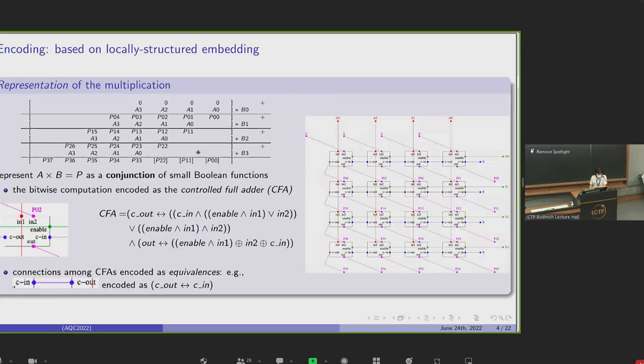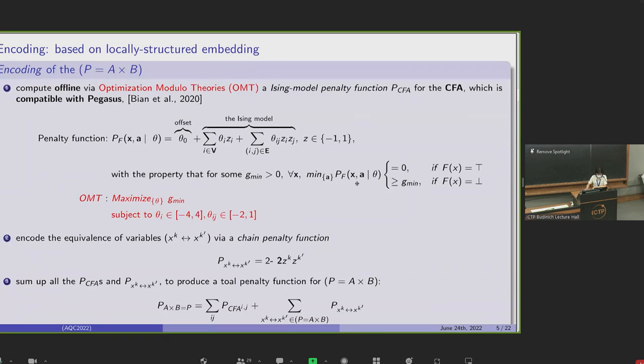Here is our encoding approach. First, we represent the multiplication as a conjunction of small Boolean functions. This is implemented by representing the bitwise multiplication with controlled full adder and representing the connection between controlled full adders with equivalence constraints. For example, C out of the current controlled full adder equal to the carry in of the next controlled full adder. You can consider this conjunction as the AND function of all components shown on the left graph. The next step is to transform this conjunction into the sum of QUBOs or Ising models of the corresponding small Boolean functions.